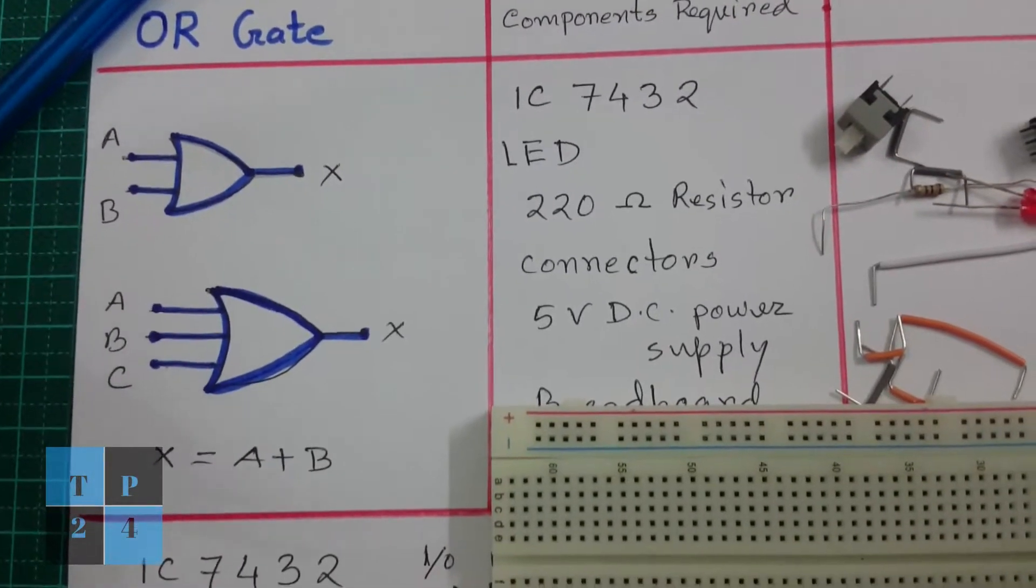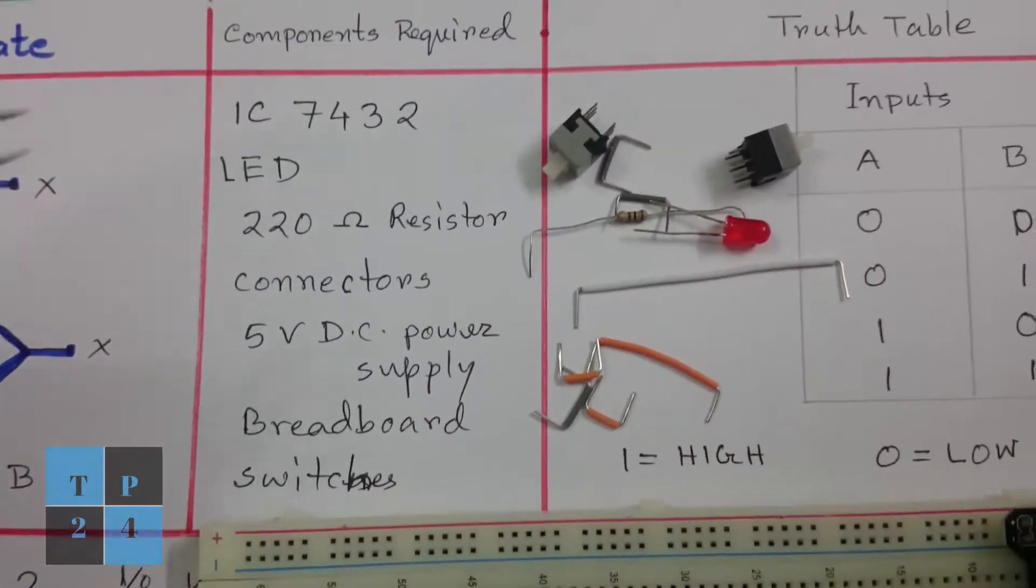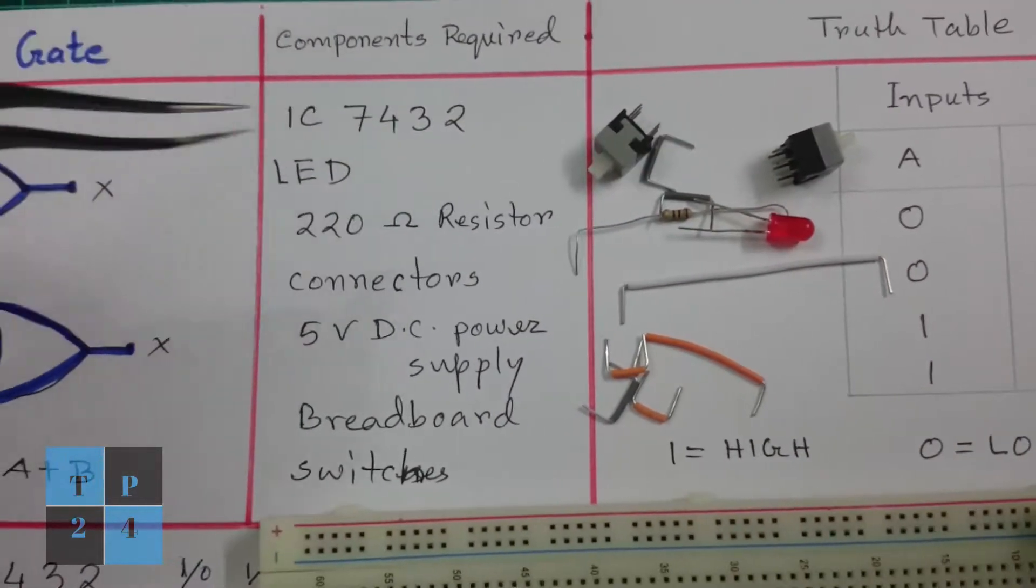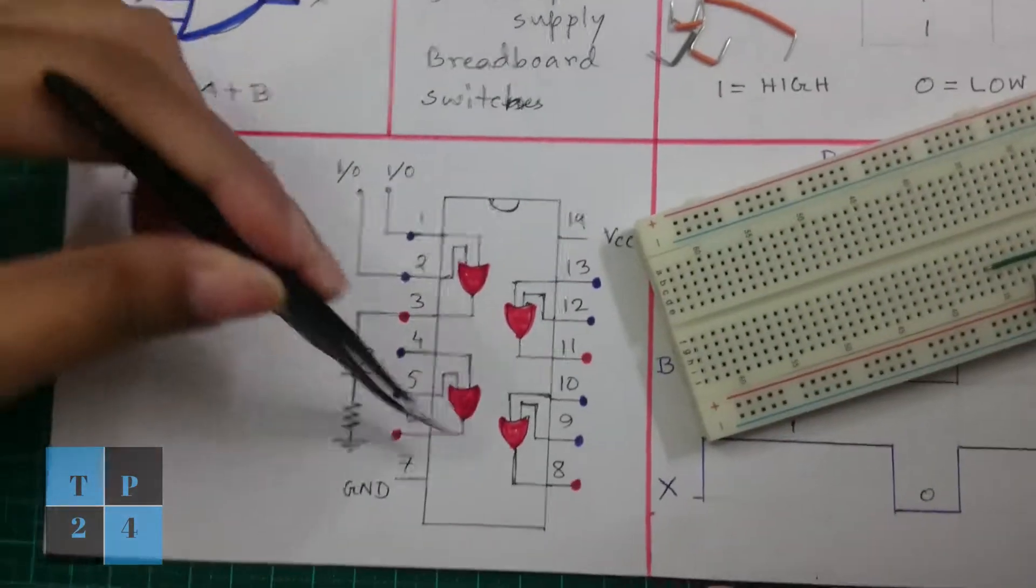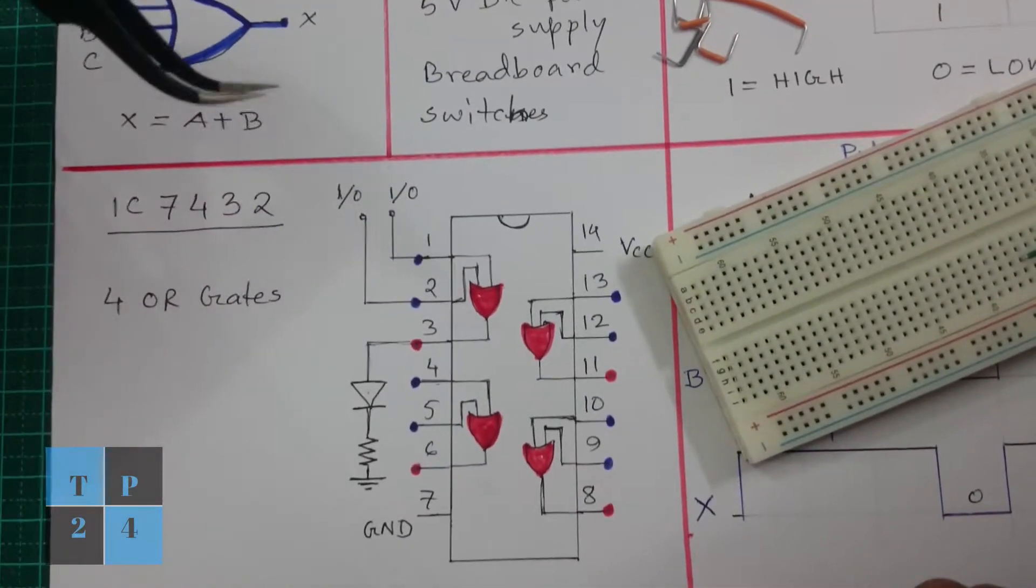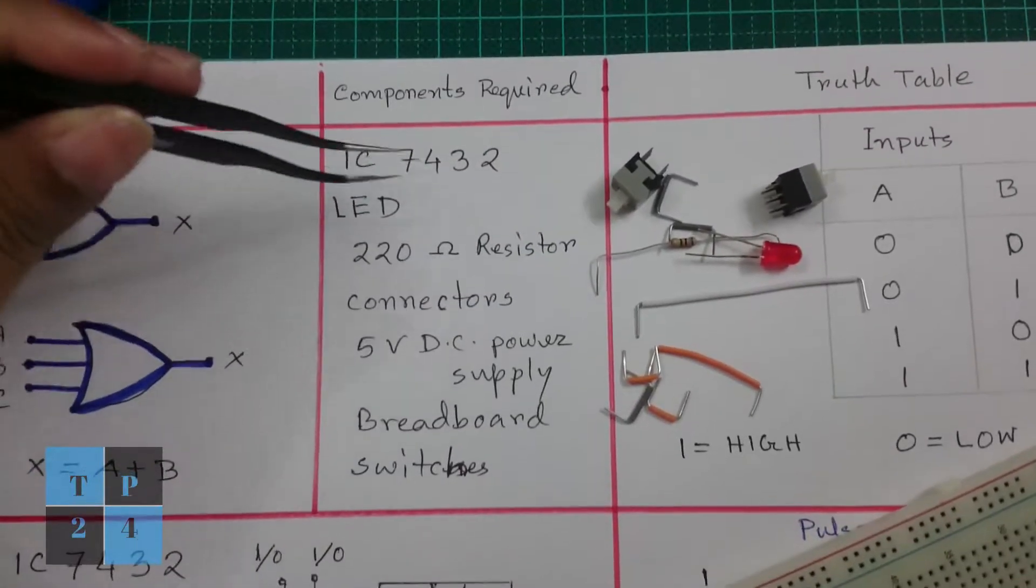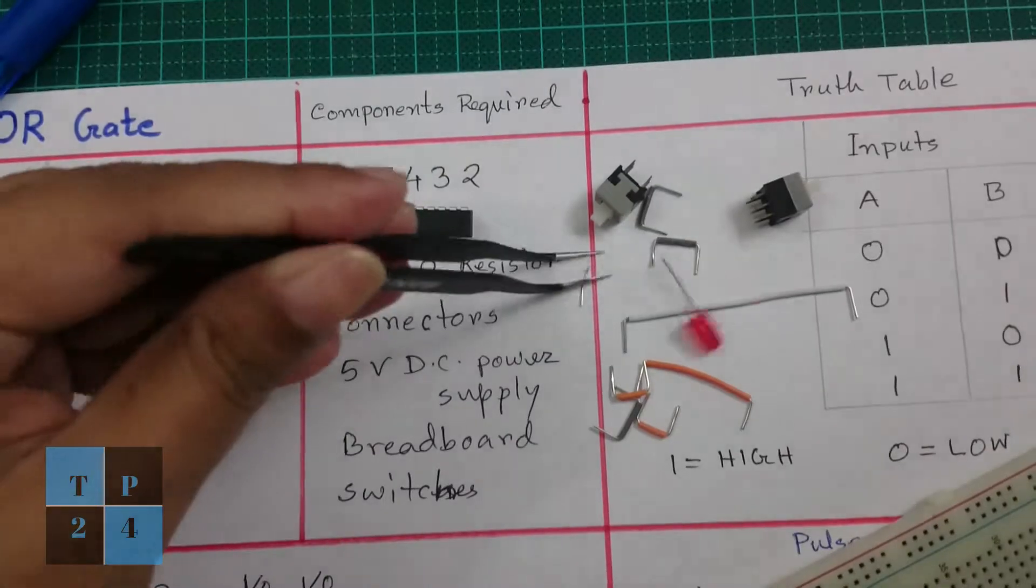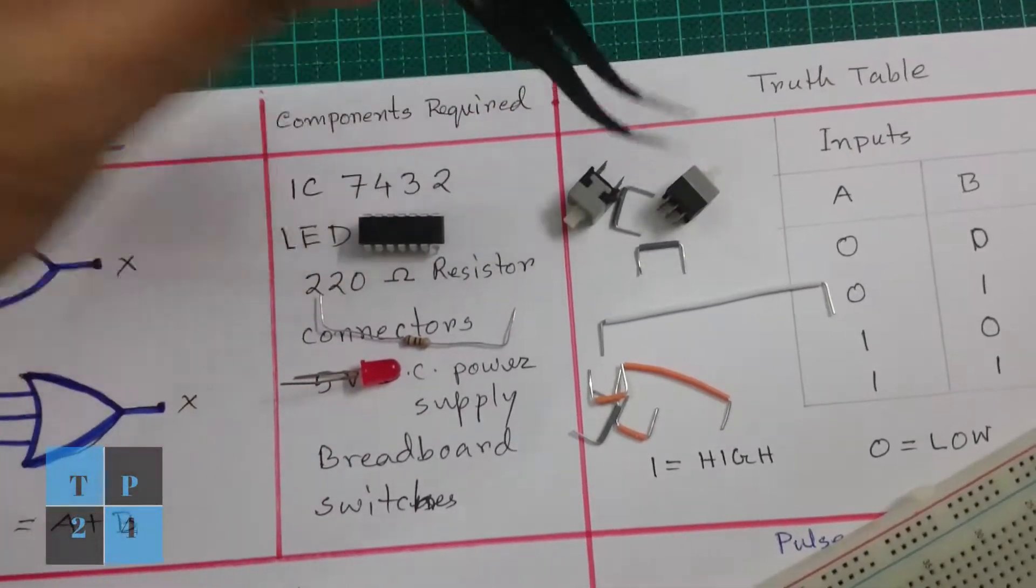So basically the OR gate performs the addition, and here I am going to use the IC 7432. This IC has four OR gates, and for performing this circuit I need some components: basically this IC, a 220 ohm resistor, one LED, and a few connectors and switches.